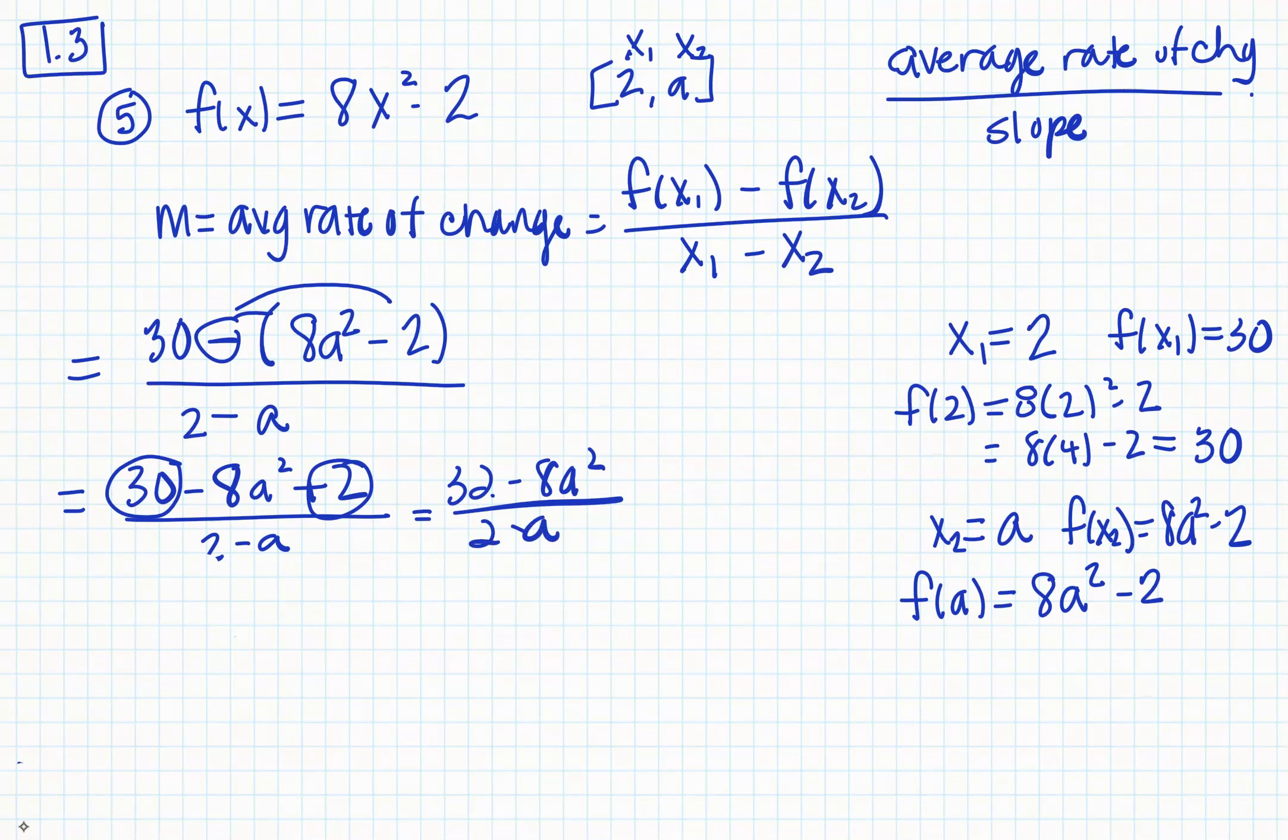And then let's factor an 8 out of the top. So it gives me 4 minus a squared all over 2 minus a. Now the top is the difference of two squares, so we can factor that into 2 minus a times 2 plus a, all over 2 minus a. So you can see that these 2 minus a's are going to cancel to give you 8 times 2 plus a.